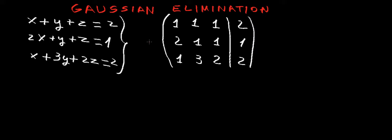This matrix has a column for the coefficients of x: 1 multiplies x here, 2 multiplies x here, 1 multiplies x here. Then a column for the coefficients of y: 1, 1, 3. Then a column for z: 1 times z, plus 1 times z, and 2 times z — that's our 1, 1, 2.